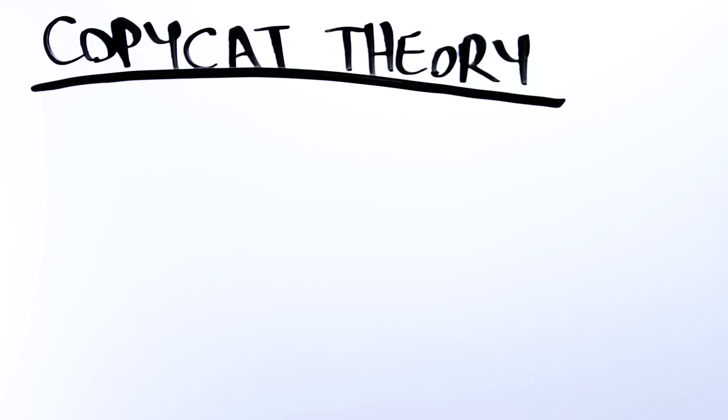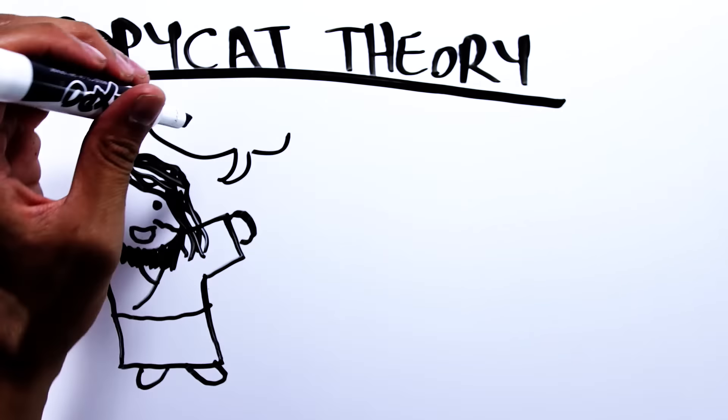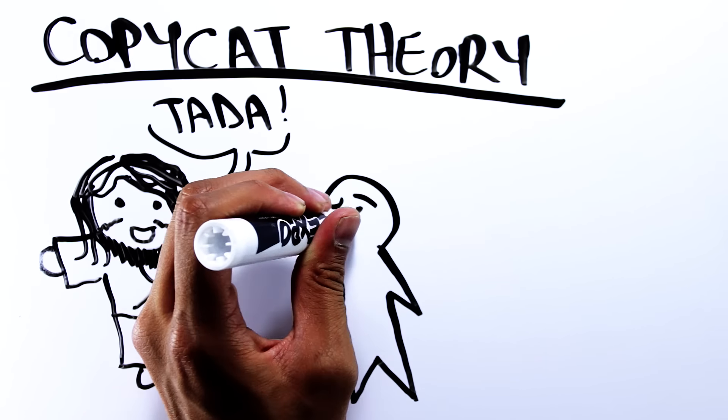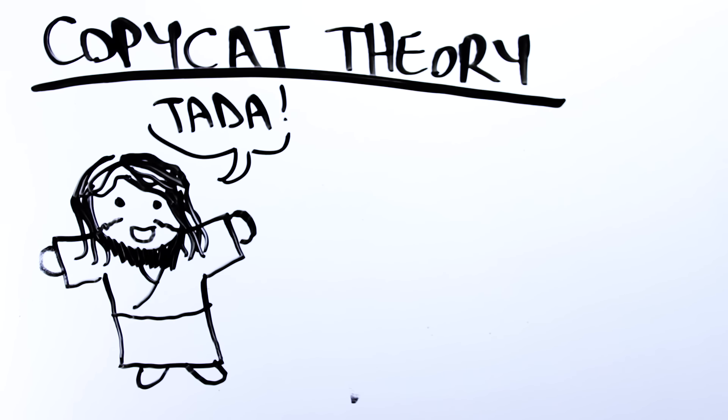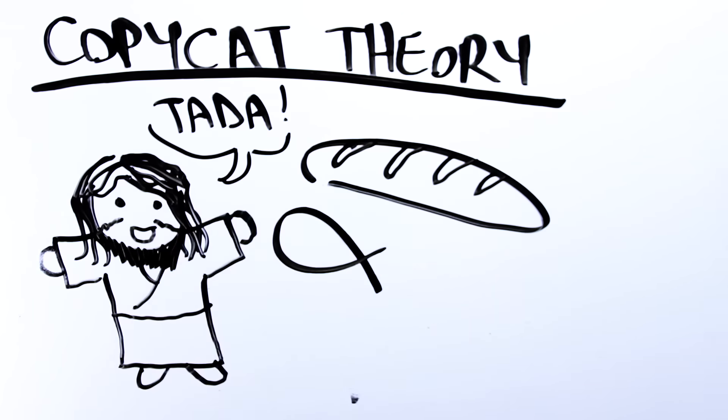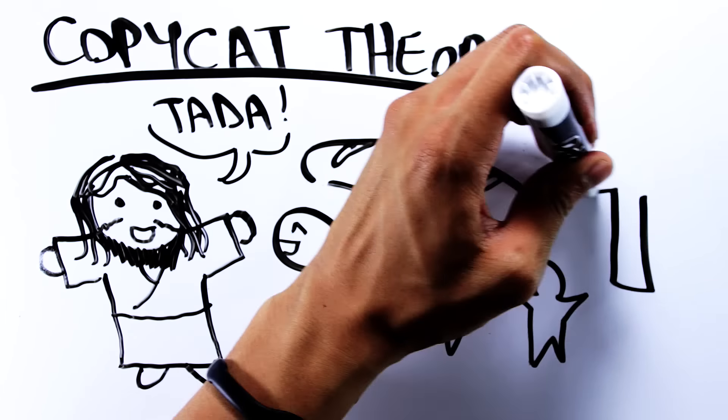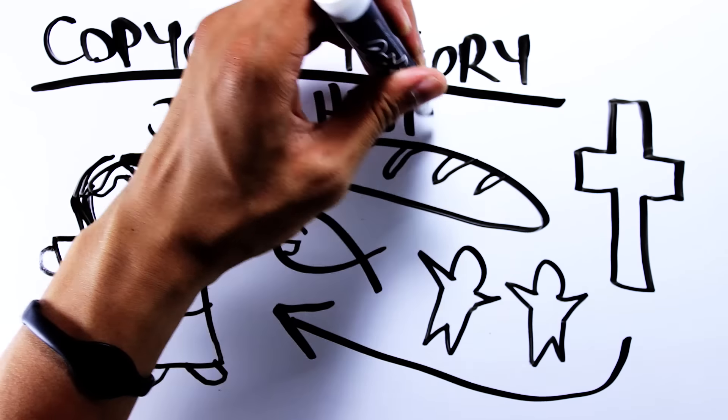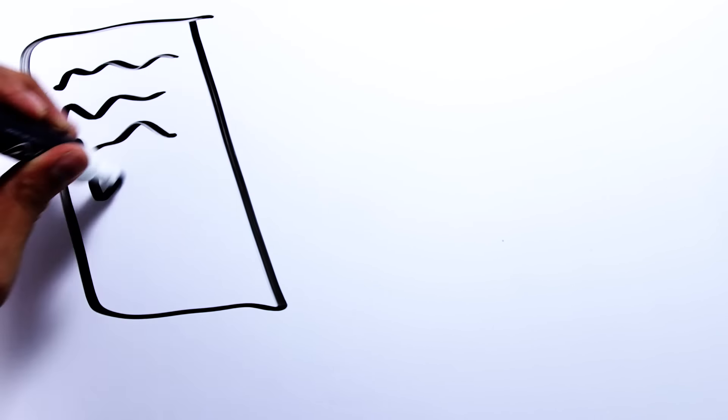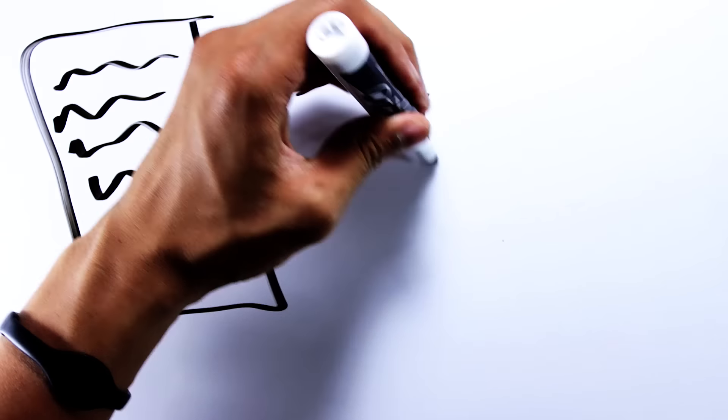And the last popular alternative to the resurrection is the copycat theory, which says nothing in Christianity is original. Jesus was just another dying and rising god in the tradition of Osiris, Mithras, Adonis, and Dionysus. There's plenty of other gods, religious figures, and mythology guys that died and rose again. But the only problem with this view is that Jesus of Nazareth actually ate, slept, performed miracles, died, and returned to life. All of these accounts are supported by a reliable historical record. In contrast, the dying and rising gods of the mystery religions were timeless myths repeated annually with the changing seasons.